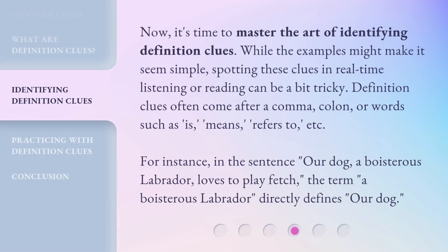Now, it's time to master the art of identifying definition clues. While the examples might make it seem simple, spotting these clues in real-time listening or reading can be a bit tricky. Definition clues often come after a comma, colon, or words such as "is," "means," "refers to," etc. For instance, in the sentence "Our dog, a boisterous Labrador, loves to play fetch," the term "a boisterous Labrador" directly defines "our dog."